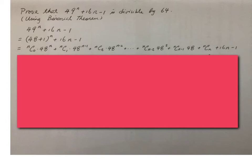And then you will see the last few terms. And then we have nC(n-2) × 48², and then nC(n-1) × 48. nC(n-1) × 48, actually we know the value should be 1, and then plus 16n minus 1.